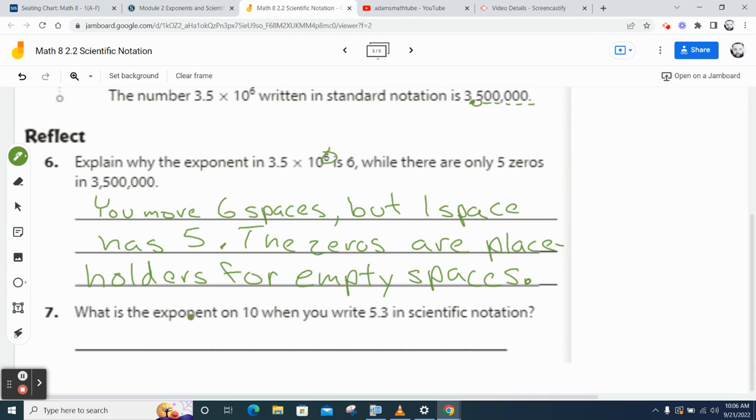So now it says, what is the exponent on 10 if you write 5.3 in scientific notation? So let's think about that. So if I say 5.3 times 10 to the something, I don't know what that something is yet. It has to equal 5.3. So this is kind of a trick question. So 5.3 times 10 to some power equals 5.3. What power should I plug in there?